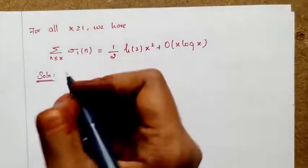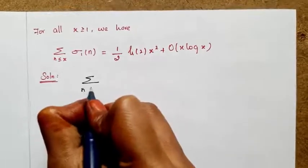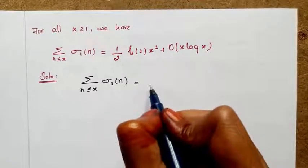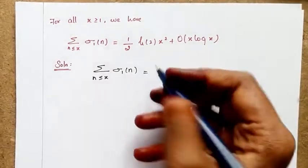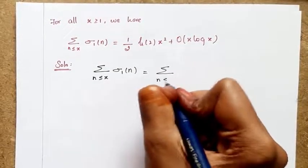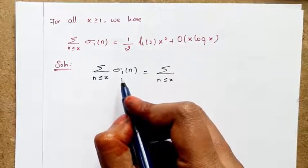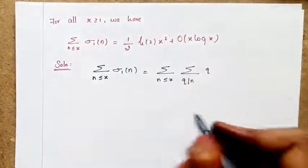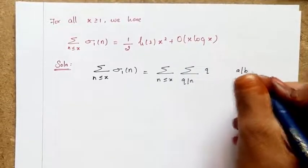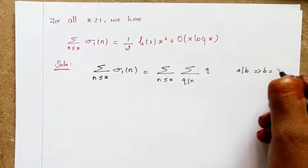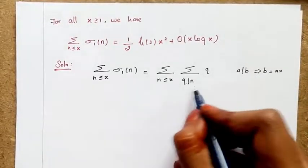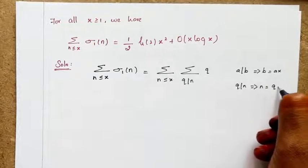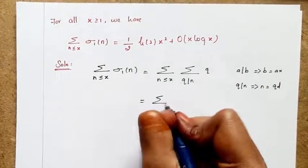Now let's solve the first problem. Consider sum over n ≤ x of σ₁(n). This sigma function denotes the sum of divisors of n, so I can write this as sum over n ≤ x of sum over q dividing n of q. Since q divides n, I can write n as a product, taking that integer as d.